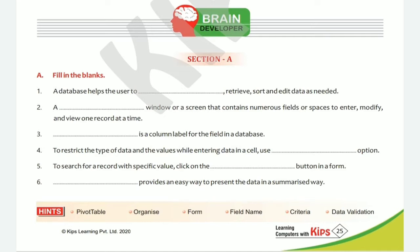Second: a dash window or a screen that contains numerous fields or spaces to enter, modify and view one record at a time. The answer is Form. A Form window or screen contains numerous fields or spaces to enter, modify and view one record at a time.